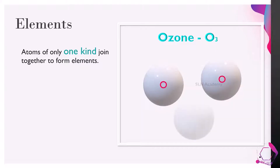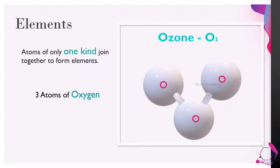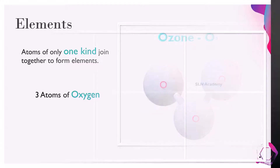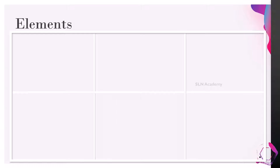Ozone is represented by O3, that means it is made up of three atoms of oxygen. In examples such as the Nitrogen molecule, Oxygen molecule, and Ozone, we have observed that they are all made up of the same kind of atoms. In the same way, there are plenty of elements which are made up of same kind of atoms.